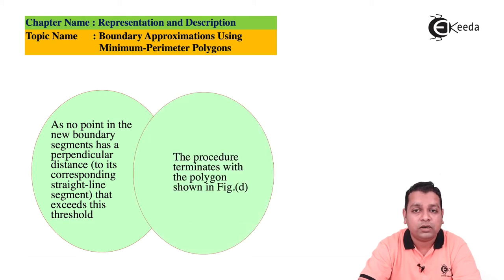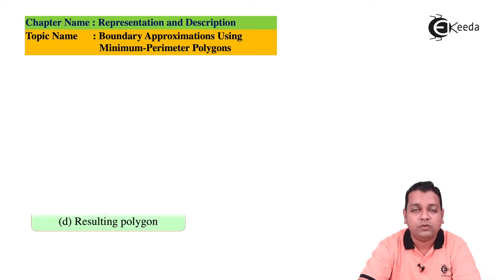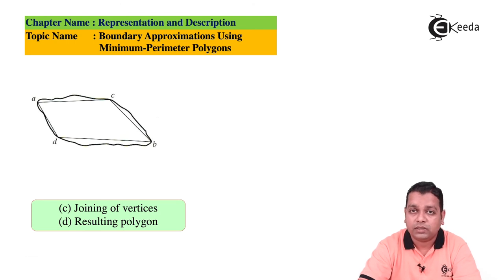Figure (c) represents the joining of vertices marked by a, b, c, and d on the boundary. The resulting polygon extracted from this figure is shown on the right as Figure (d).